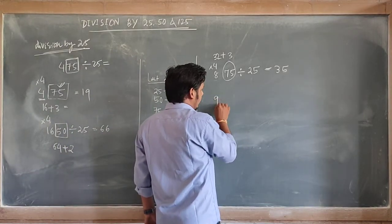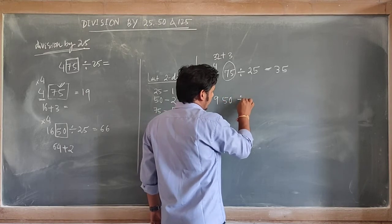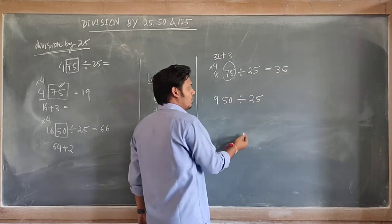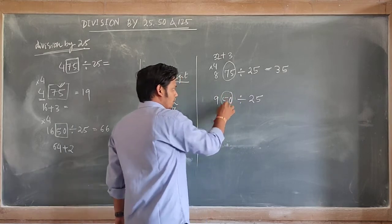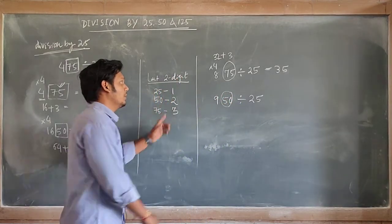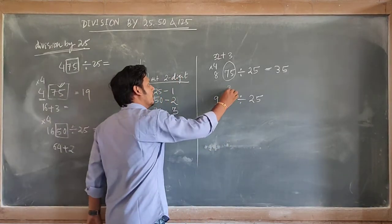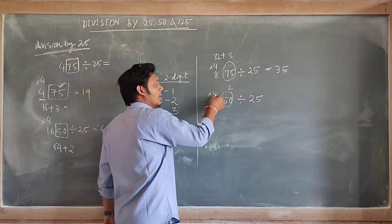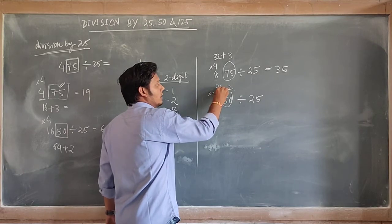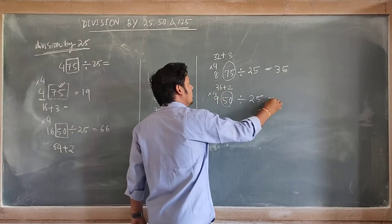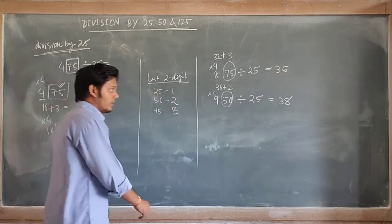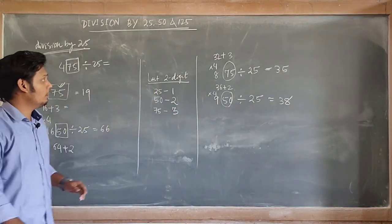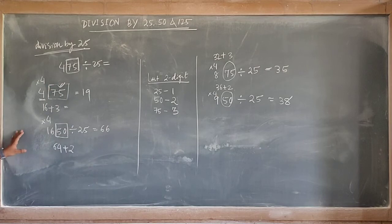Suppose 950 divided by 25. First, separate the last two digits. Then 9 is multiplied by 4, giving 36. The last two digits are 50, so add 2. That gives 36 plus 2, which is 38. In this way you can solve division by 25.